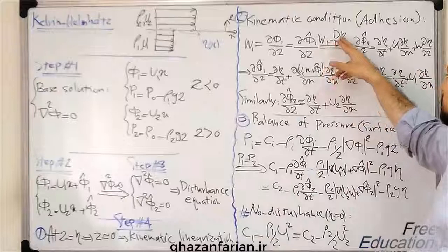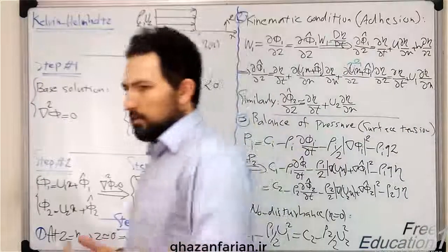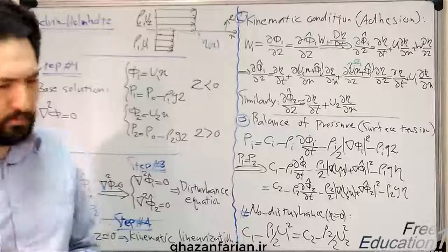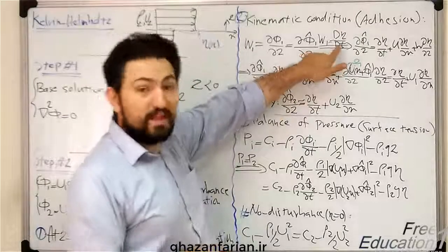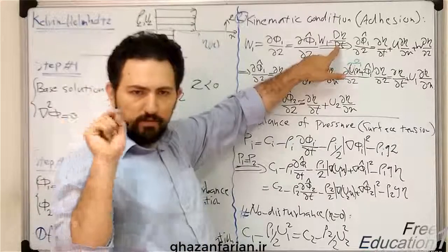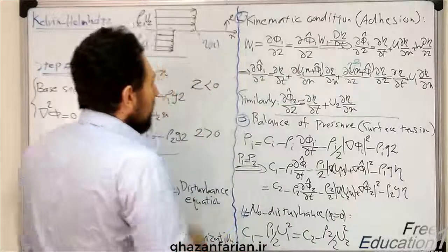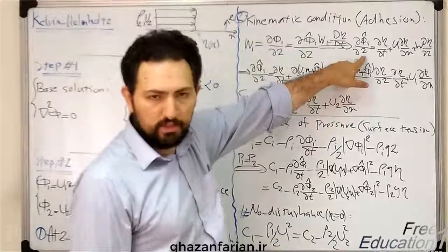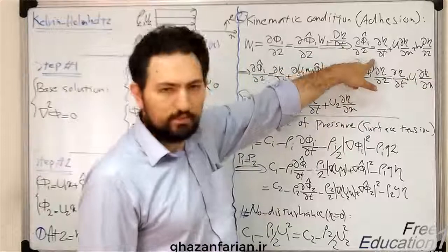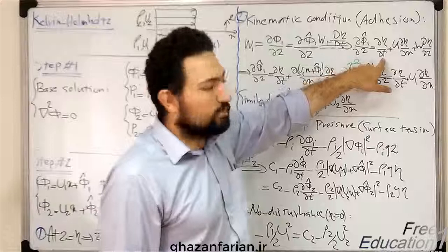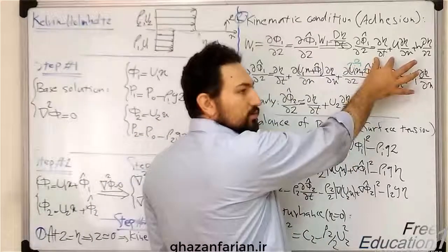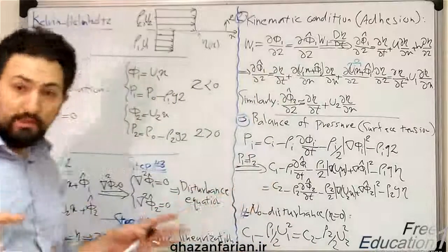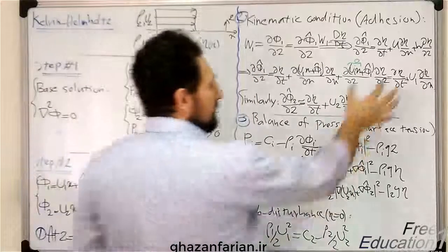From the kinematic condition, w1 is the derivative of eta. Since we are working in the Eulerian frame, the velocity is the material derivative of the displacement eta. We therefore have two w expressions: the first is the partial derivative of phi-1 with respect to z, and the other is the total (material) derivative of eta. The material derivative includes a local derivative term and two advection or nonlinear terms, so we need to linearize this condition by dropping those nonlinear terms.